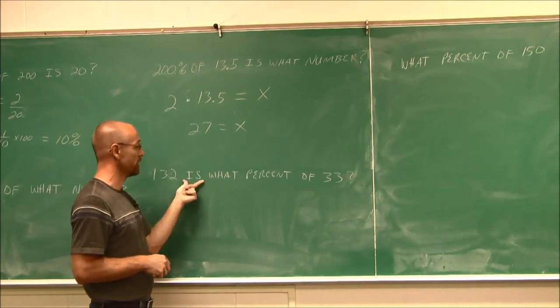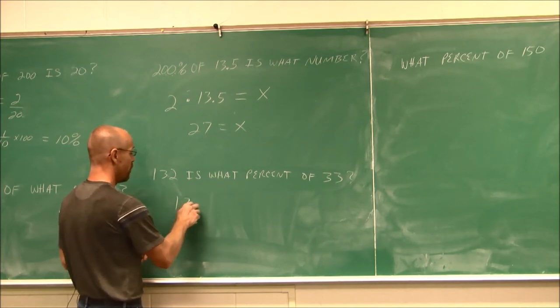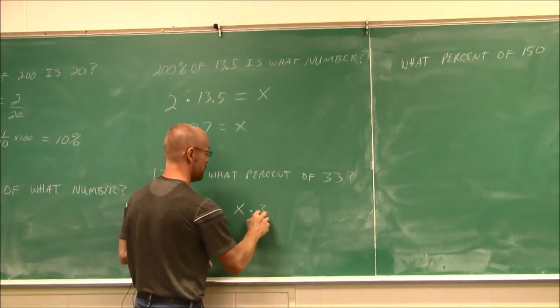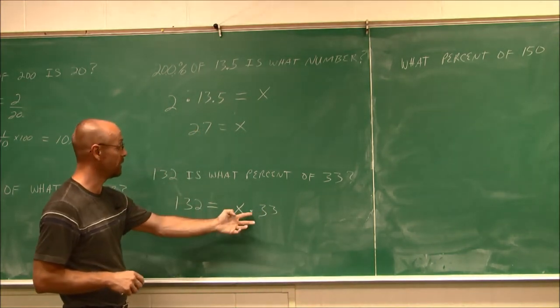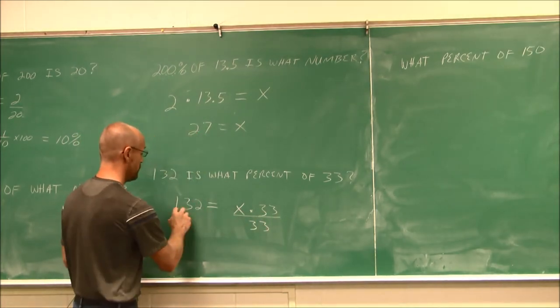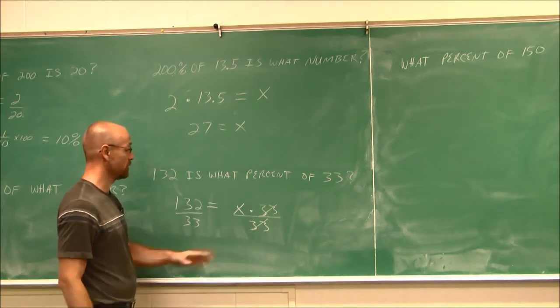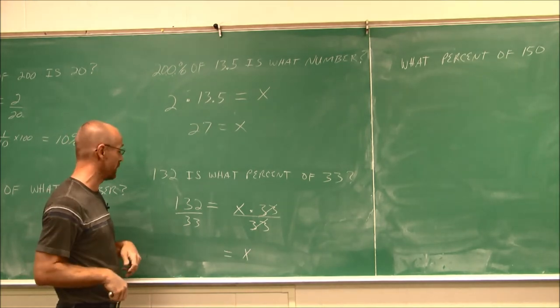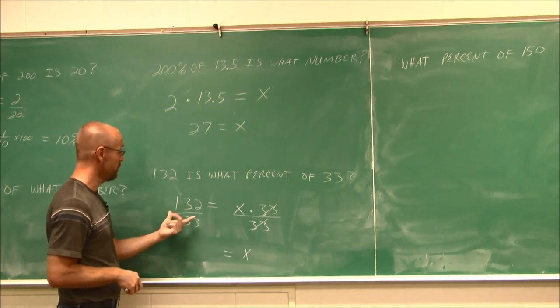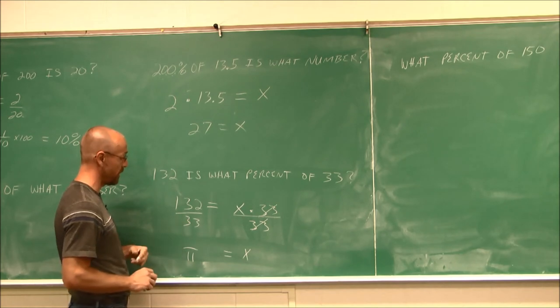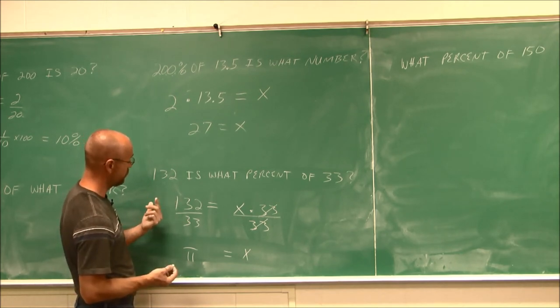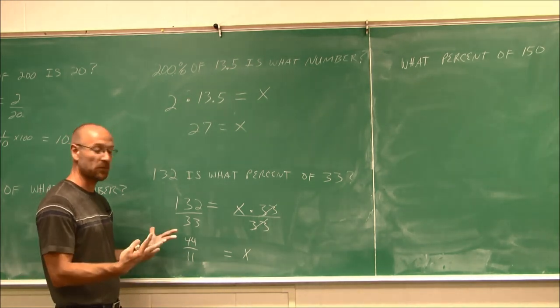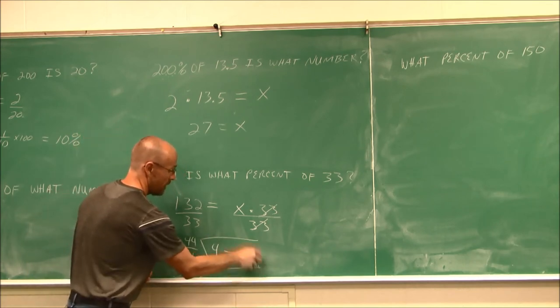All right, the next one says 132 is what percent of 33? So we just direct translation. 132 is what percent, which I'm going to assign as x, of 33? Of 33. Now, we've seen one similar to this. I'm going to undo this multiplication with its reciprocal operation. And what I do to one side, I do to the other. And now, that reduces. 1 times x is just x. And we see this is really just a fraction. So maybe I want to do that division, or maybe I want to reduce before I do that division. I recognize both of these values are divisible by 3. So this would be 11 if I divide out of 3. This would be, let's see, 44. And now we can see, hey, 44 divided by 11. Maybe we recognize that we don't even have to do long division. 44 divided by 11 is 4. So we find x equals 4.